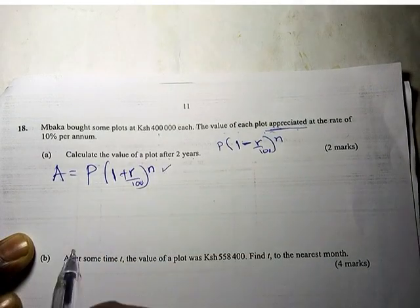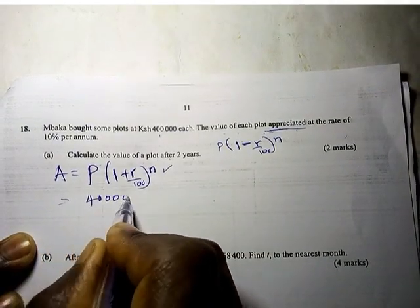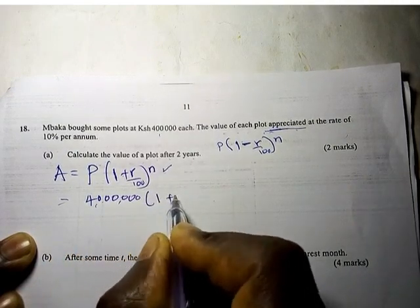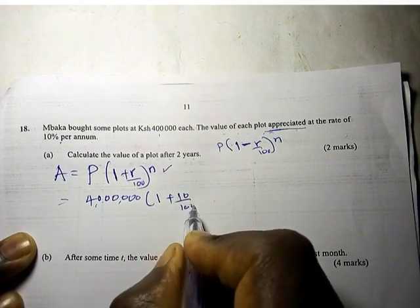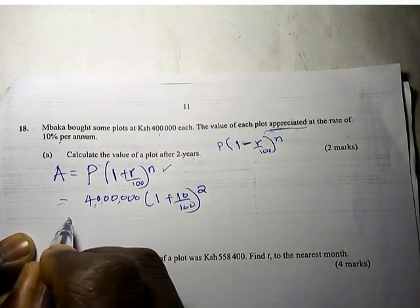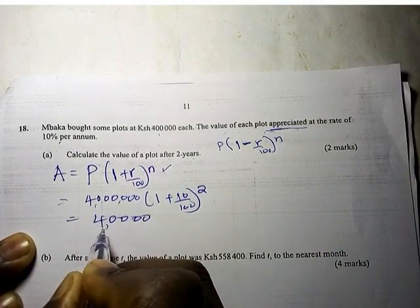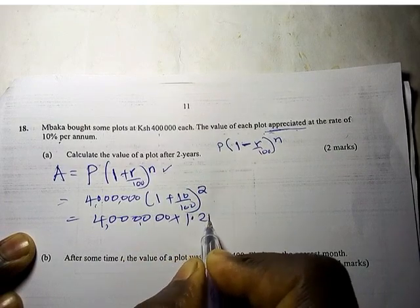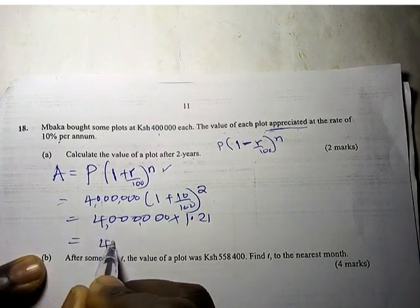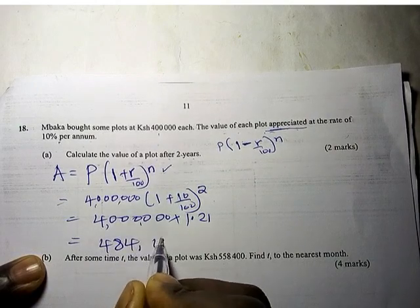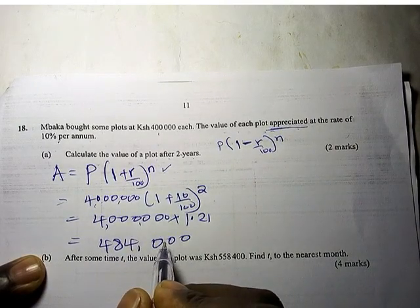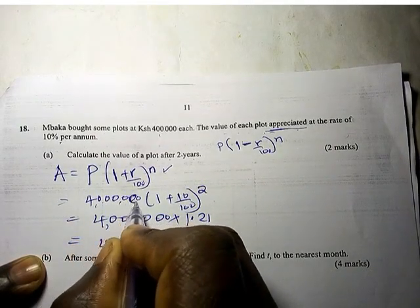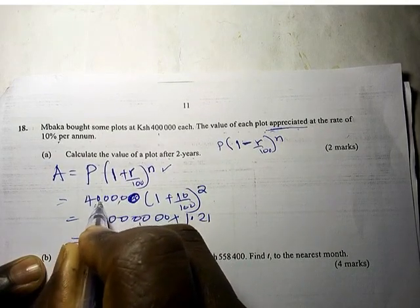So our principal is 400,000. That's 400,000 times 1 plus 10 over 100. After 2 years, our N is 2. This is 400,000 times 1.21, which equals 484,000.